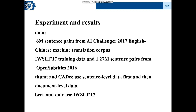We have two parts of training data for the NMT models. The first part is sentence-level corpus — about 6 million sentence pairs from the AI Challenger 2017 English-to-Chinese Machine Translation corpus. The second part is document-level data from IWSLT 2017 training data and about 1.27 million sentences from Open Subtitles 2016. For the first and second models, we first use sentence-level data to train, then use document-level data. For BART-NMT, we only use the IWSLT 2017 training data.